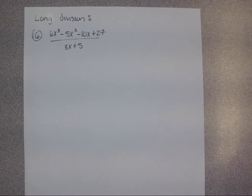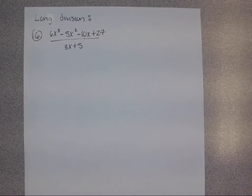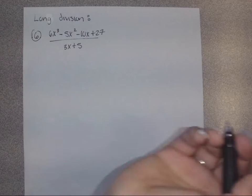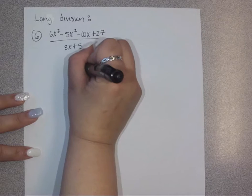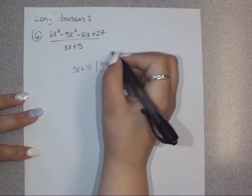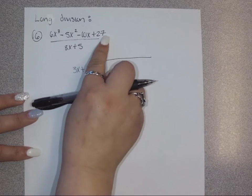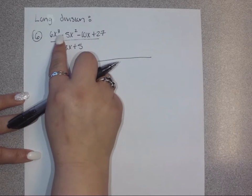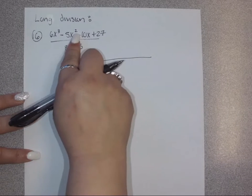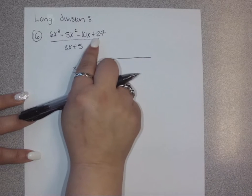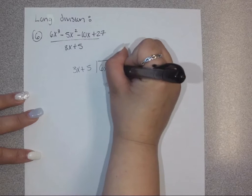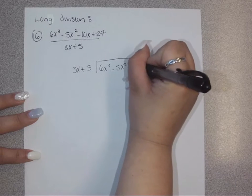Let's look at applying long division. We have the polynomial 6x cubed minus 5x squared minus 10x plus 27, and we're trying to divide by 3x plus 5. First, start by setting up your long division. We have our divisor of 3x plus 5, and you have to make sure every power is represented — power of 3, down to power 2, power of 1, and power 0. In this case, everything is represented so we don't have to worry about filling in any of the powers.